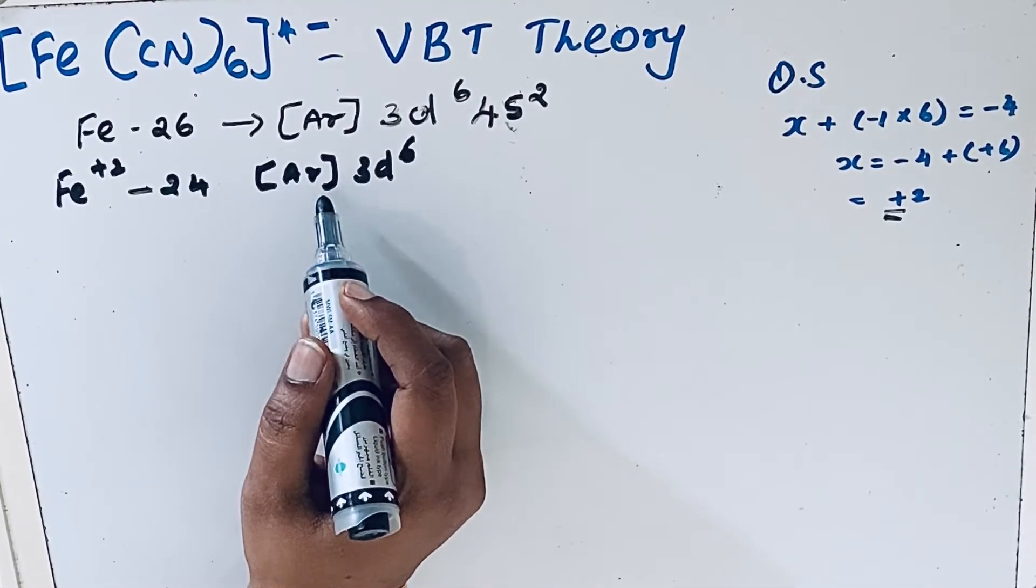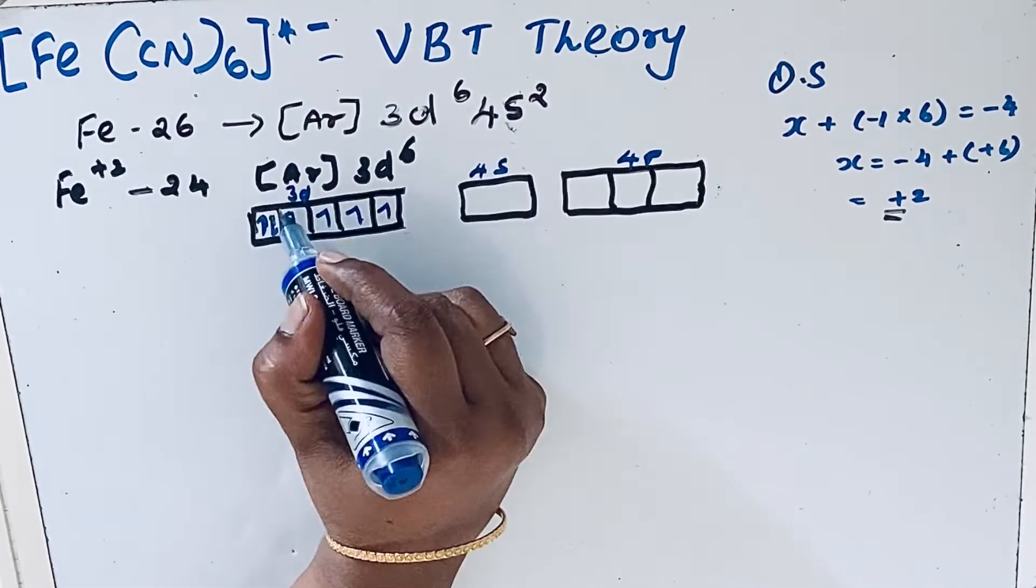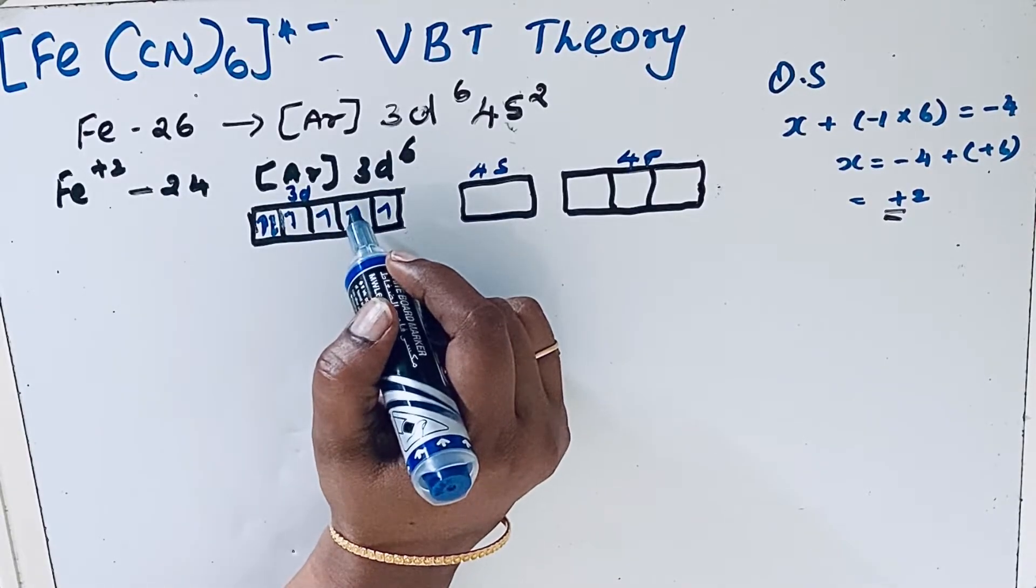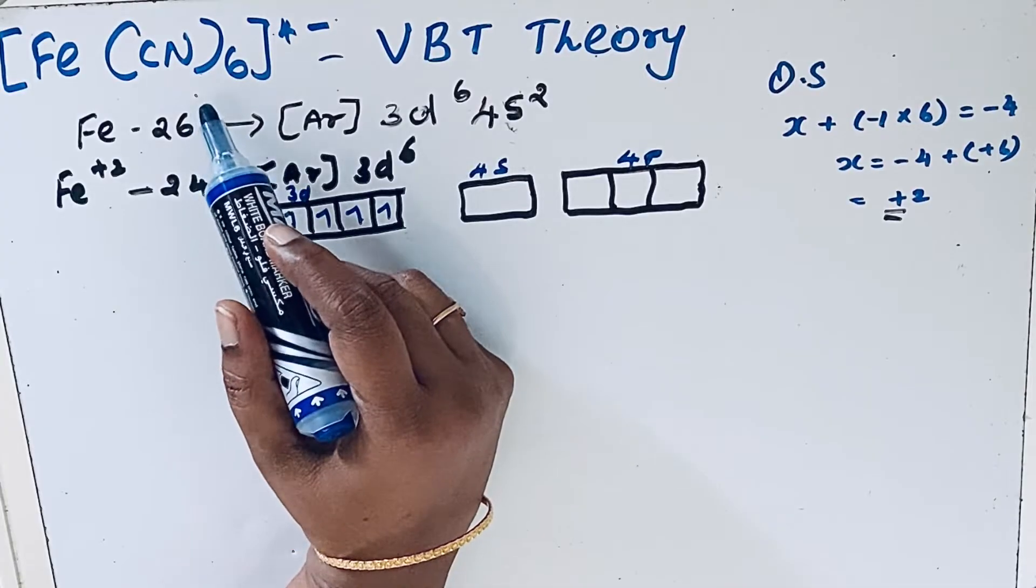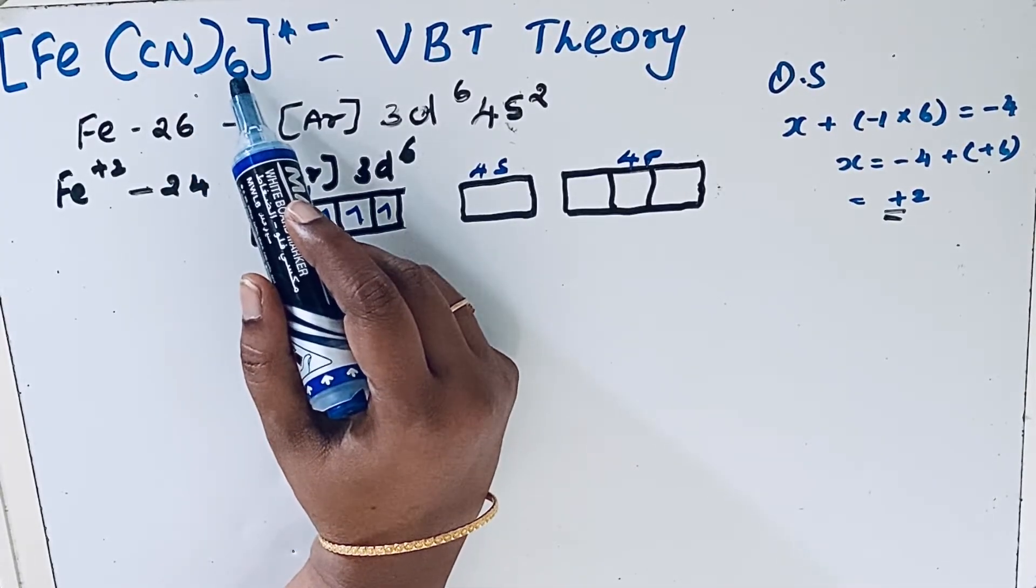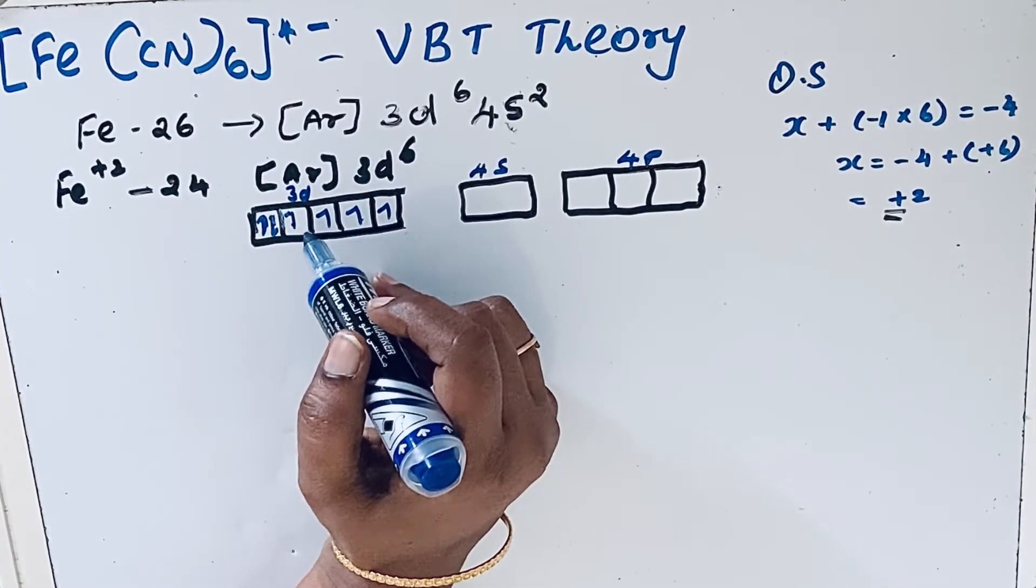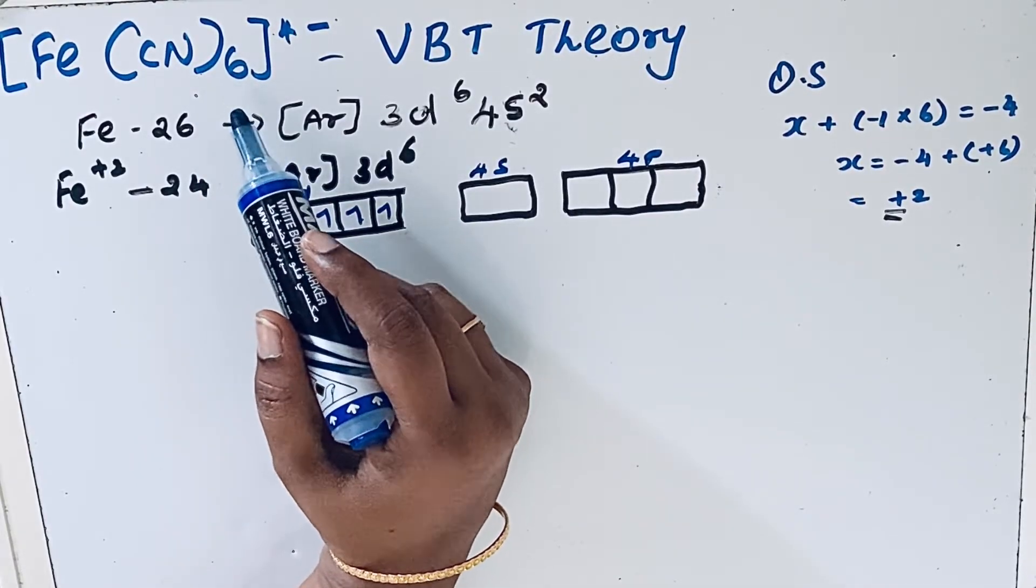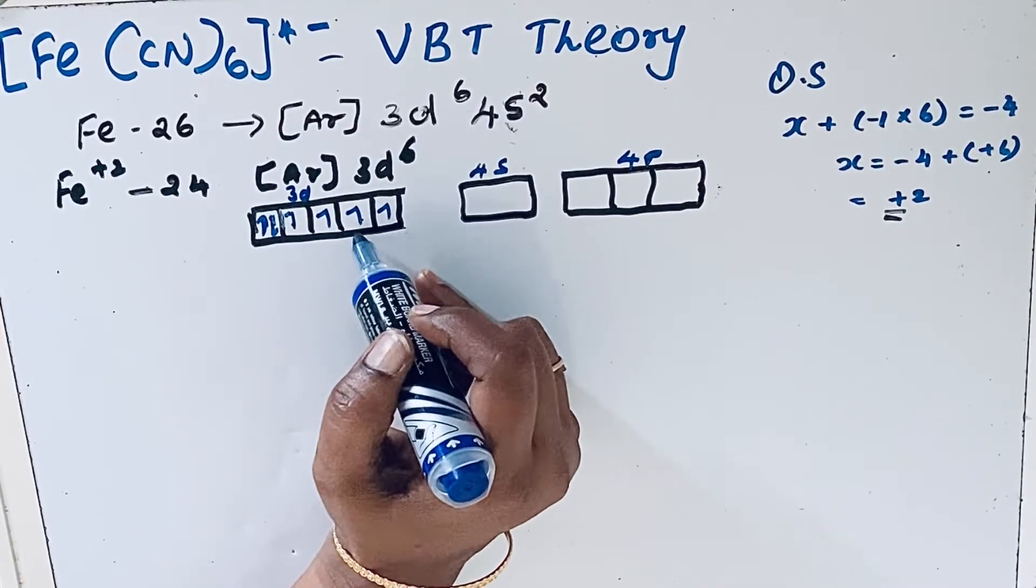Let us show this as a box diagram. In the ground state, there are 6 electrons in the 3d orbitals. During the excited state, under the influence of the cyanide group, pairing takes place because cyanide is a very strong ligand. This leaves two